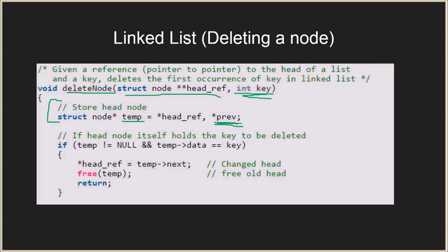If the head node itself holds the key to be deleted, we handle it as a special case. We check if temp is not null and if the key matches the data in temp — meaning the key is in the very first node. If so, we update the head reference to the next of temp and then free temp, releasing the memory allocated by malloc. Then we simply return.